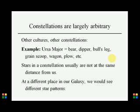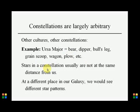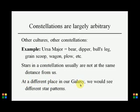There are fixed shapes that change only over millennia — tens of thousands of years. For example, Ursa Major is known as the Big Dipper, Bull's Leg, Grain Scoop, Wagon, Plow, and other names in different cultures. Stars in a constellation are usually not at the same distance from us — they are not a cluster. Their apparent grouping is due to relative movements as seen from Earth, not physical proximity. From a different place in our galaxy, we would see different star patterns.